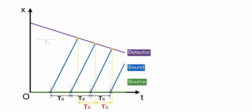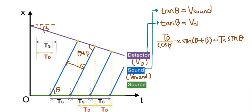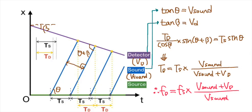Td is shorter than Ts and the detected frequency is getting larger, so higher pitch in hertz. As in the previous case, you can find the formula between Ts and Td. The inverse of this formula gives the relationship between the frequencies of emitted sound and the detected sound.